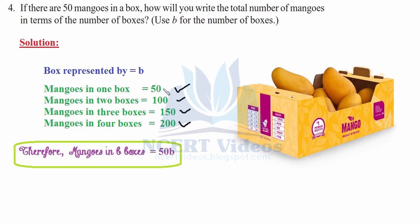Similarly, for 3 boxes, 50 times 3, we will take B as 3 in this case, so 150. Now B is 4 for 4 boxes. Therefore, what you can deduce from this is that mangos in B boxes will be 50B. For example, if B is 2, then 50 times 2 is 100. You just have to multiply 50 with the variable. The variable is something that changes.